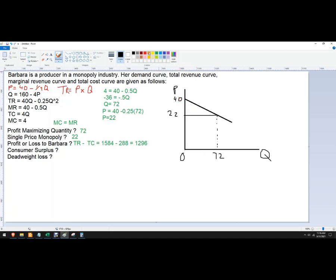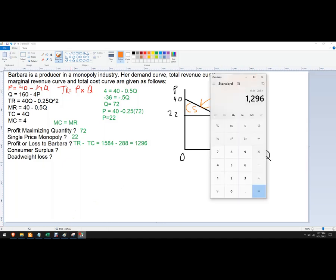So this whole thing right here will be consumer surplus, so that triangle right there under the monopoly. So it's one-half the difference here, which is 18, times the difference here, which is 72, zero to 72. So it's 18.